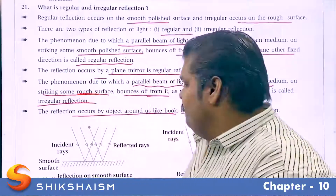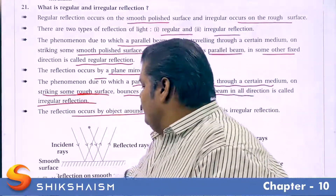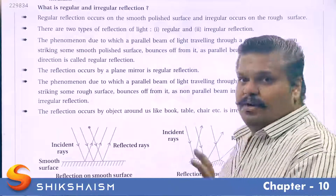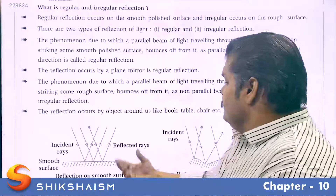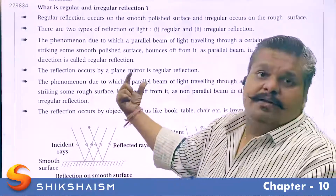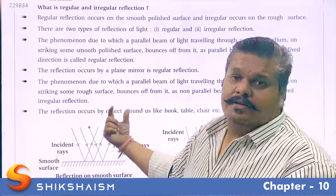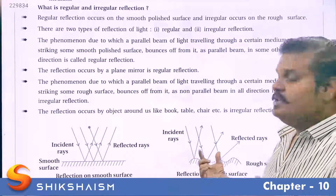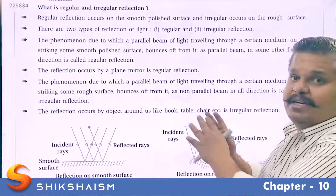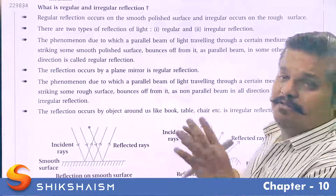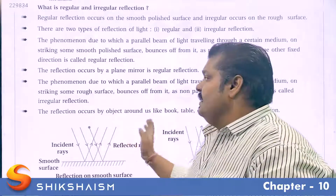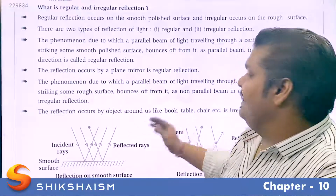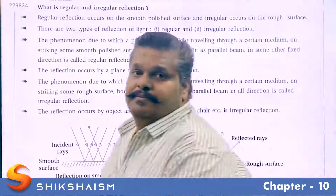Now we can derive the difference between regular and irregular reflection. For regular reflection, you need a smooth and highly polished surface; for irregular reflection, a rough surface. The reflected rays are parallel in regular reflection, but in irregular reflection the reflected rays are not parallel — they are spread over a wide area. These are the important points about regular and irregular reflection.